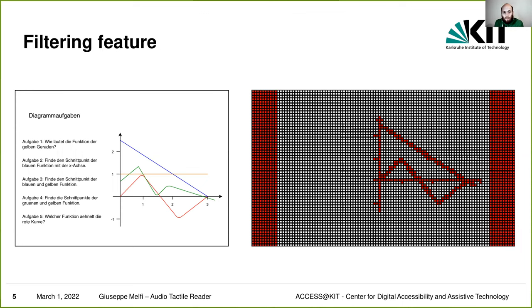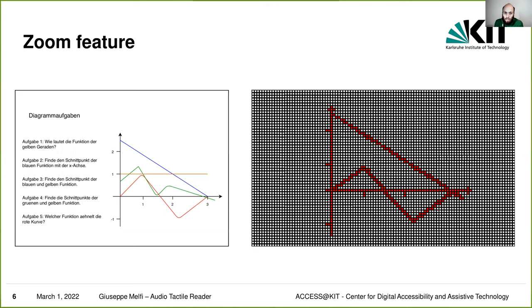The user can listen to the content with a double tap on a symbol. Another feature of the system is filtering — in this example, we removed the text field and also the elements in orange and green. The last feature developed was a zoom to improve the readability of complex graphics and documents.